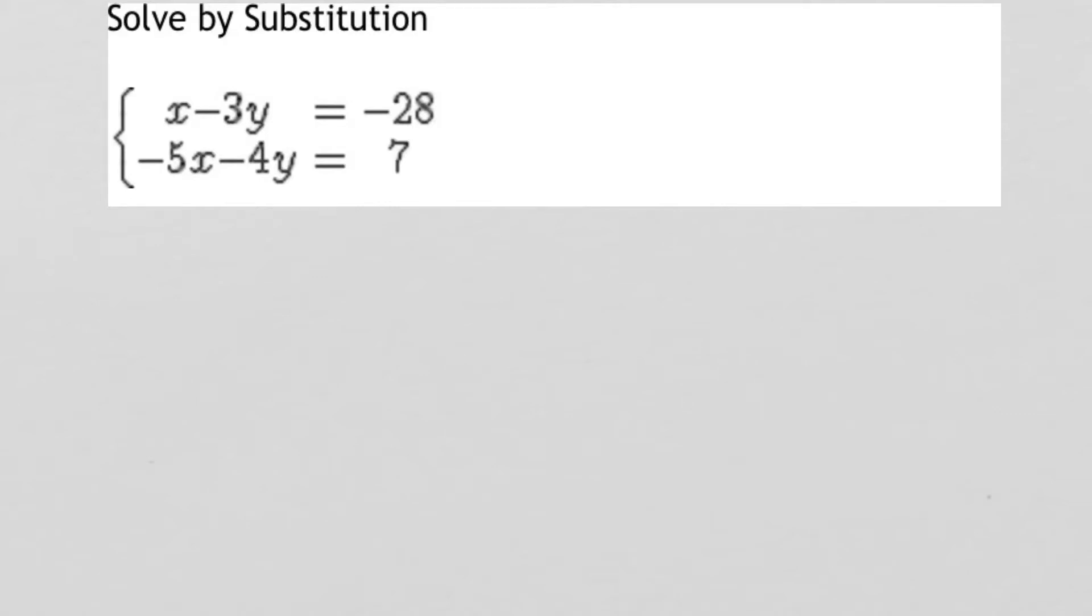Let's take a look at solving a system of linear equations using substitution. We're going to solve the system x minus 3y equals negative 28, negative 5x minus 4y equals 7.